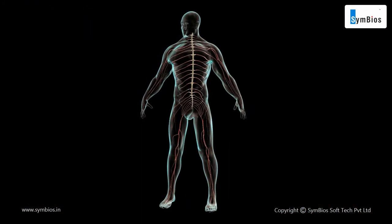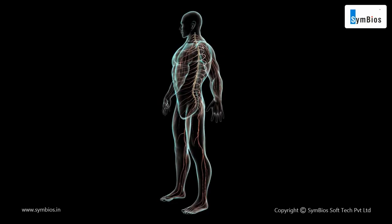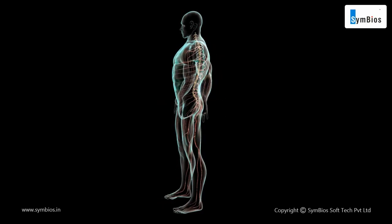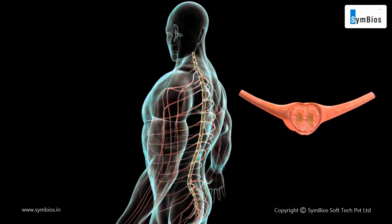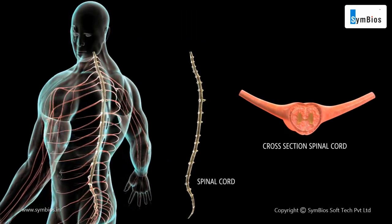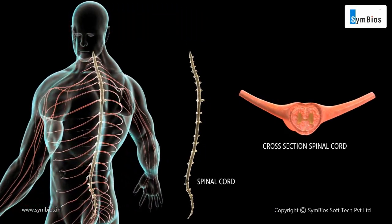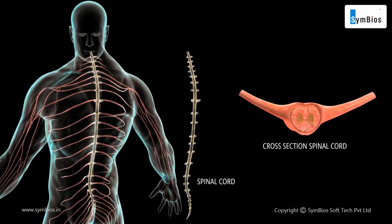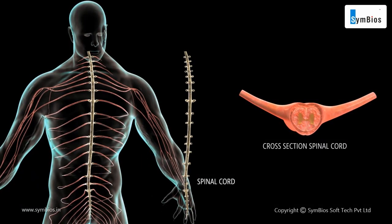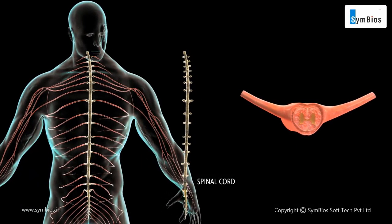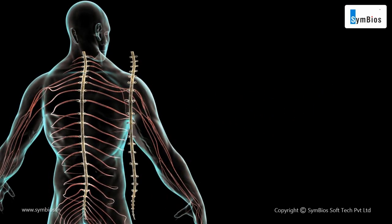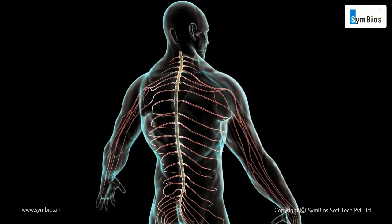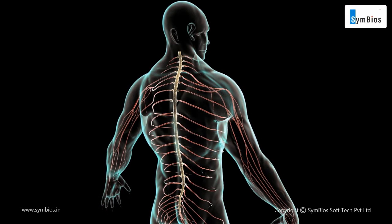Likewise, the impulses travel to the spinal cord through the sensory neurons. The spinal cord is a long, thin, tubular bundle of nerves connecting the brain and peripheral nervous system. The spinal cord facilitates the transmission of sensory and motor nerve impulses to and from the brain.